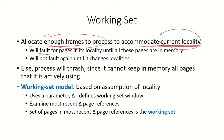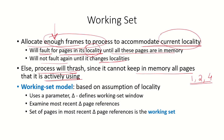The process will fault for pages in the locality until they have been brought into memory, and then it will not fault again until it changes locality. If we do not provide enough frames for the locality, the process will keep thrashing since it cannot keep all actively used pages in memory. For example, if the current locality is pages 1, 2, and 4 — needing 3 frames — but only 2 frames are allocated, it will continuously fault between pages, causing thrashing.